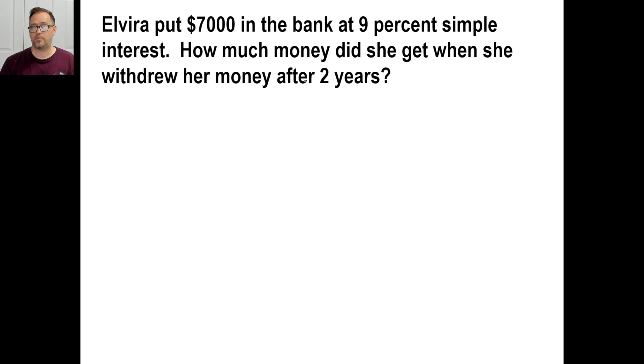Okay. Elvira puts that much in the bank at 9%, blah, blah, blah. How much money after two years? Okay. So we need to figure out what is 9% 0.09 times 7,000. Right? That's our first problem. So you can yoink this over twice. So X is equal to 9. And let's go over twice times 70. Well, that's $630.